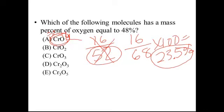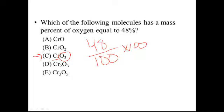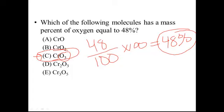We're looking for 48%, and 23.5% is too low. Jumping to letter C, CrO3: oxygen weighs 16 times 3, which is 48. The total mass is chromium (52) plus oxygen (48), which equals 100. So 48 divided by 100 times 100 equals 48%. Letter C is the correct answer.